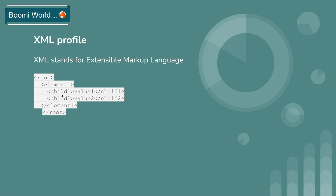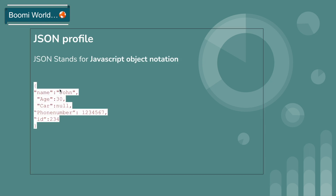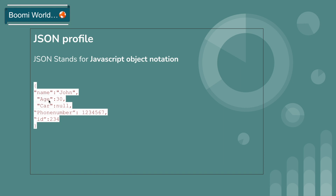The XML profile should have a root element; under the root element will have sub-root elements; under sub-root elements will have child elements. And next, JSON profile — JSON stands for JavaScript Object Notation. It is a combination of characters and numbers. The JSON profile looks like this.